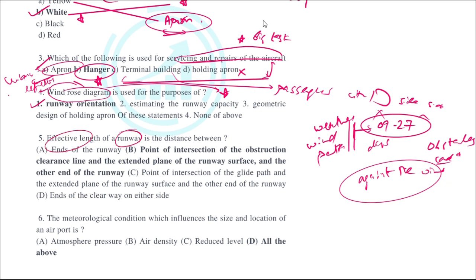The effective length of the runway is the distance between the point of intersection of the obstacle clearance line and the extended plane of the runway surface, to the other end of the runway. Just remember: it is the intersection of the clearance line and the extended plane of the runway surface.